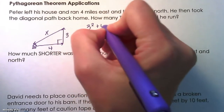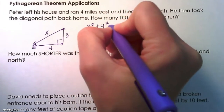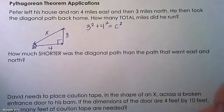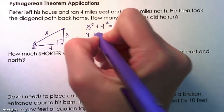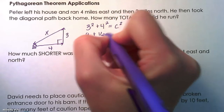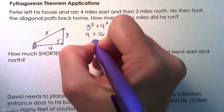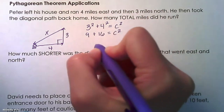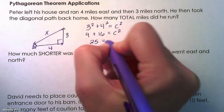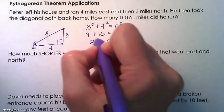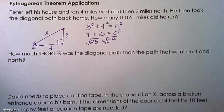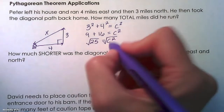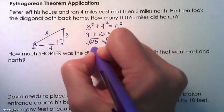That would be three squared plus four squared equals c squared — or you could use x if you wanted to. Three squared is nine, four squared is 16, equals c squared. Nine plus 16 is 25. Our final step in Pythagorean theorem is always to take the square root of both sides of the equation, so we get c equals five.